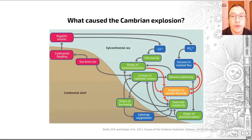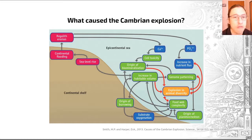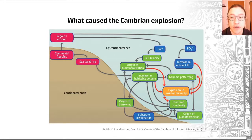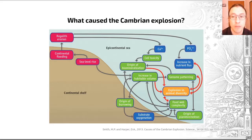There are a multitude of suggested possible causes, and this diagram borrowed from Smith and Harper, a paper in 2013, provides just a few of these — I recommend you check out Smith and Harper if you want more details. Recent hypotheses generally fall into three categories. One: this could have been a developmental or genetic event, where the evolvability of bilaterian animals and the tendency to induce escalatory arms races led to rapid evolution.